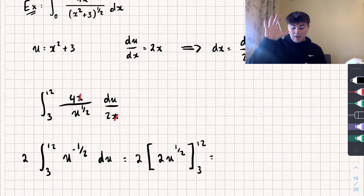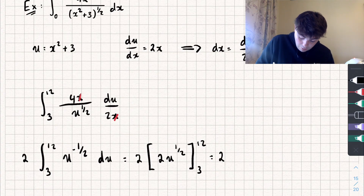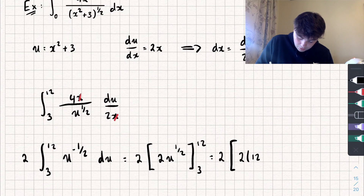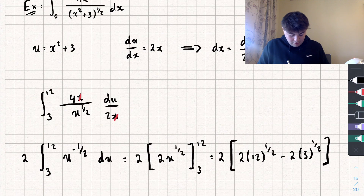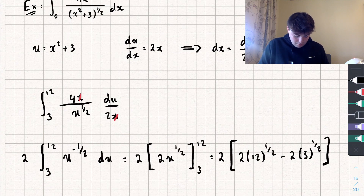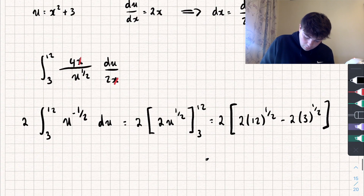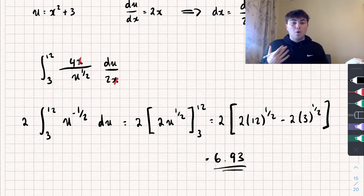Substituting in the upper limit and subtracting the lower limit, we get 2 multiplied by 12 to the power of a half, or square root of 12, minus 2 multiplied by 3 to the power of a half. Using the calculator, that gives us an answer of 6.23 to two decimal places.